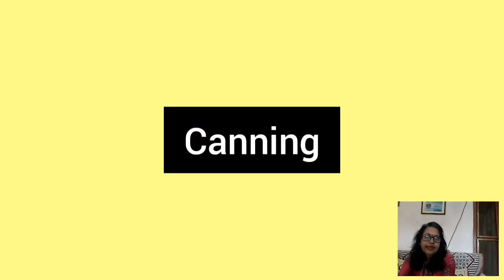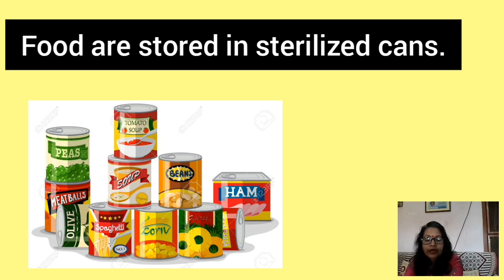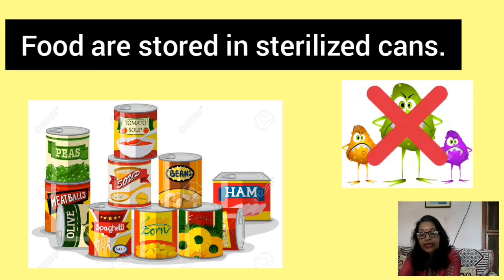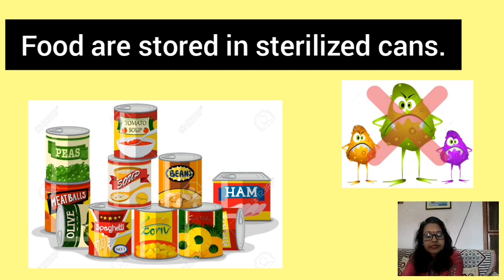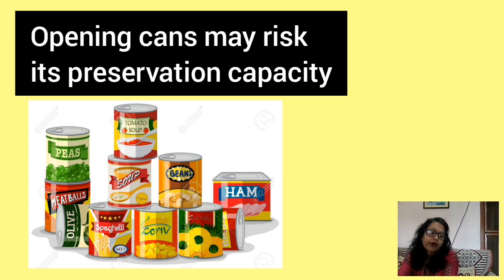Canning involves cooking food, sealing it in sterilized jars or cans, and boiling the containers to kill or weaken any remaining bacteria as a form of sterilization. However, food preserved by canning or bottling is at immediate risk of spoilage once the can or bottle has been opened.